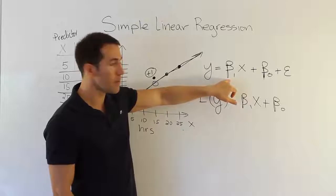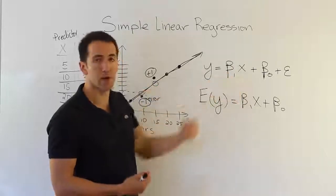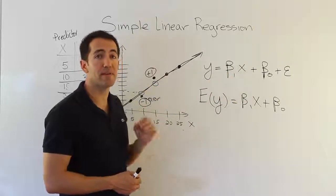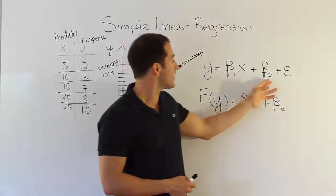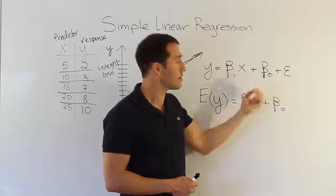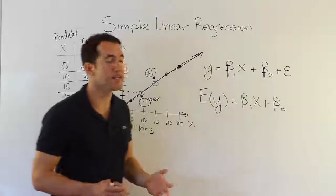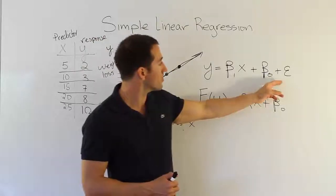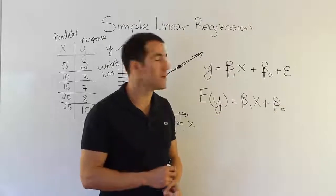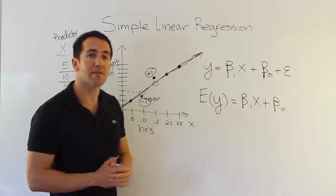So here the m, which was our slope, is replaced by beta one. Just different notation to describe the same thing, the slope of the line. Beta naught is our b from algebra. So beta naught is our y-intercept. That's where the line crosses the y-axis. That's it. And now I've got an extra term up here, the term e. That e represents the error that's in the model.